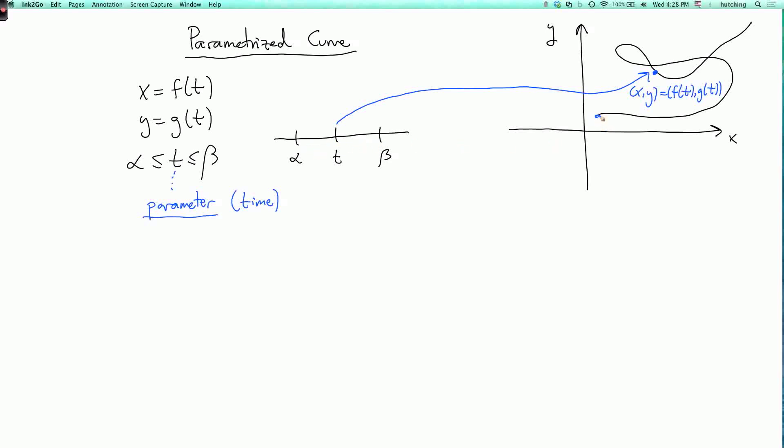So each value of t in this interval is mapped to some point on the curve. So alpha is mapped to the starting point on the curve. So this point here is f of alpha comma g of alpha. And this point here is the endpoint of the curve. So that's f of beta comma g of beta. Right? So that's the formalism we use.